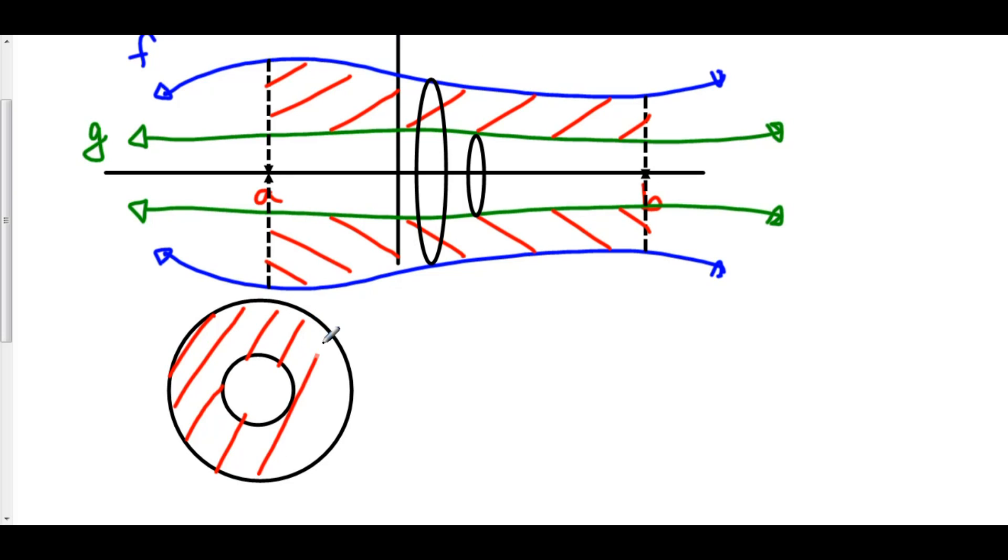Now, this is called a washer. It's sometimes used in Home Improvement to tighten a nut or a bolt. But here's our outside red region. And our inside is empty, just like this hole right here.